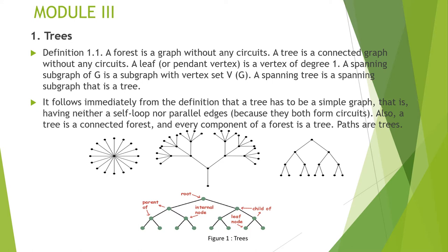It should not have a self-loop or parallel edges because they both form circuits. Every component of a forest is a tree, so paths are also trees. A tree is a path if its maximum degree is 2. You can see the examples given below — these are examples of trees.